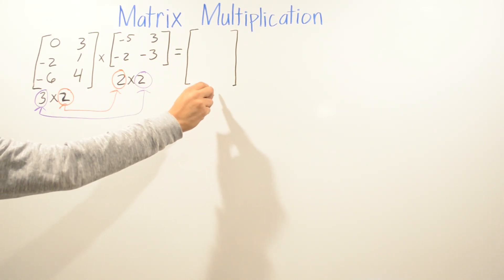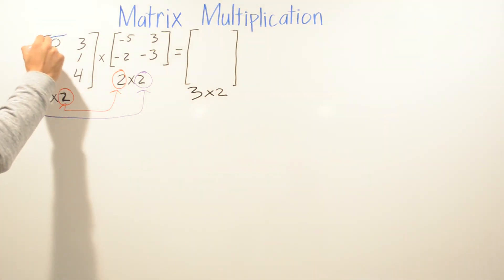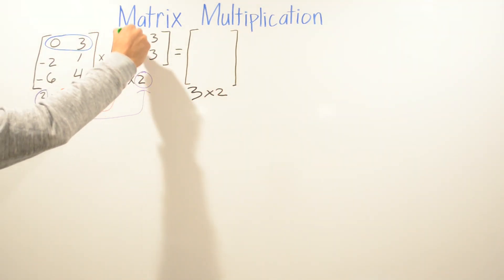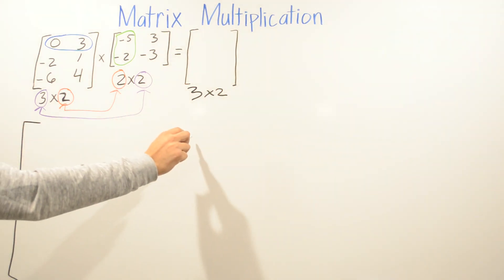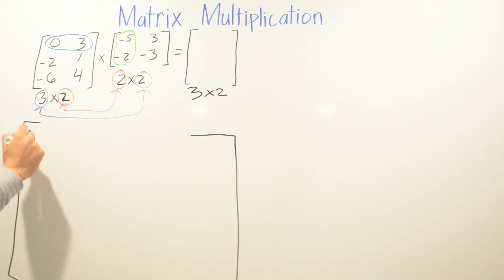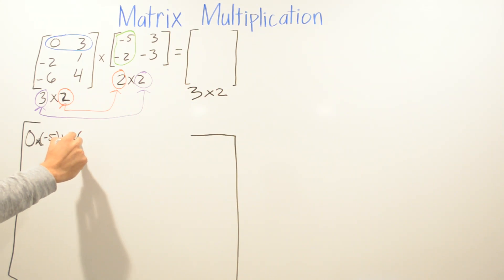The result matrix size is determined by taking the first number of the first matrix (3) and the second number of the second matrix (2), so we're going to have a 3 by 2 matrix at the end. Now we start multiplying this matrix. We multiply 0 times negative 5 plus 3 times negative 2.